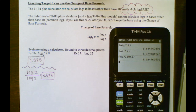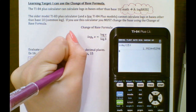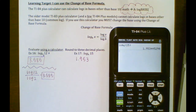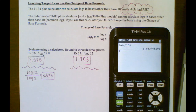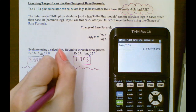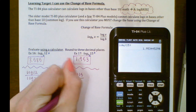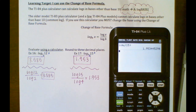Example 17: log base 4 of 15. On the calculator: Math, scroll up to log base, enter 4 of 15, and we get 1.953. Or using the change of base formula: the b value is 4 and the x value is 15, so we have log 15 divided by log 4, which equals 1.953.